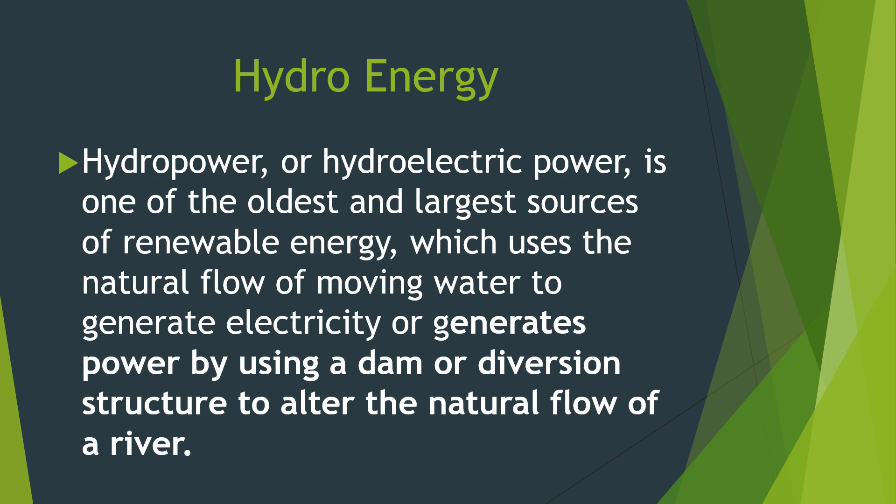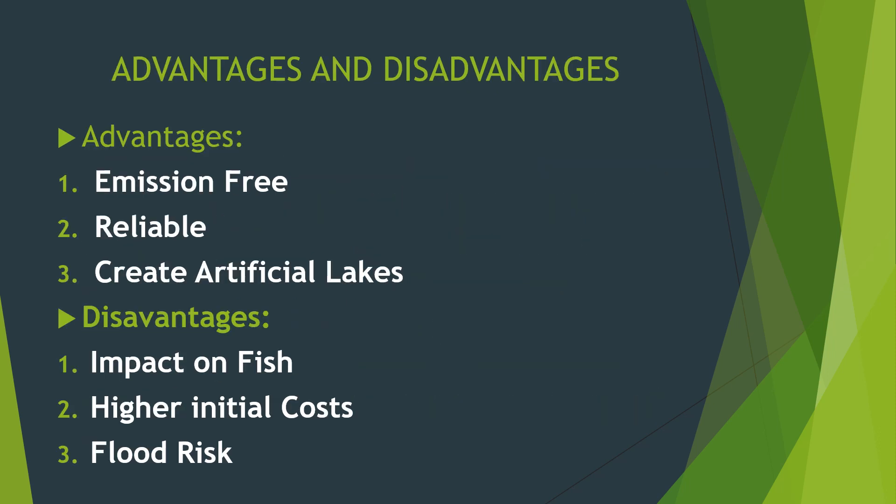Coming to hydro energy: Hydropower or hydroelectricity is one of the oldest and largest sources of renewable energy, which uses the natural flow of moving water to generate electricity. It generates power by using a dam or diversion structure to alter the natural flow of a river. Advantages: Hydropower plants, especially of the reservoir type, are well suited to provide the power system with much-needed emission-free flexibility.